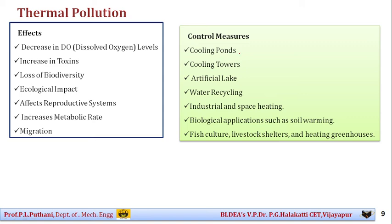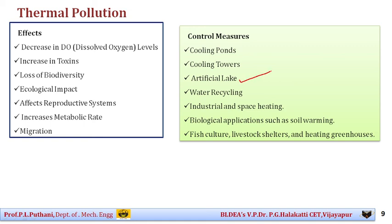What are the control measures for thermal pollution? You can have proper cooling ponds and cooling towers — especially in power plants and industries, before water is released into natural water bodies, it is kept in cooling ponds and cooling towers for certain hours where heat dissipation happens directly to the atmosphere. After the temperature gradually reduces, it can then be dumped into fresh water bodies. Cooling towers in power plants allow warm steam to pass through baffle plates, removing heat, so that by the time water reaches the lower part of the tower the temperature is completely reduced. Similarly, artificial lakes can be created where water is retained for a certain time, allowing temperature and toxins to reduce through evaporation.